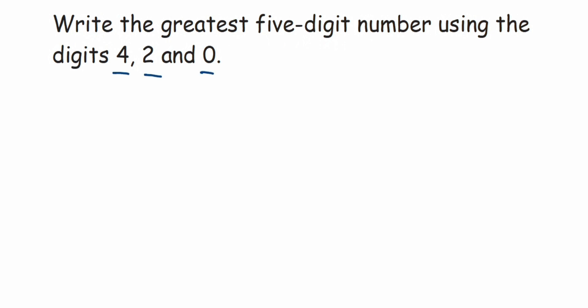Let's start solving this. They've given only three digits but want a five-digit number. So let me write down here - this is one, two, three, four, and five places. Now, the greatest digit among all three is 4, so here I'm going to write down 4.